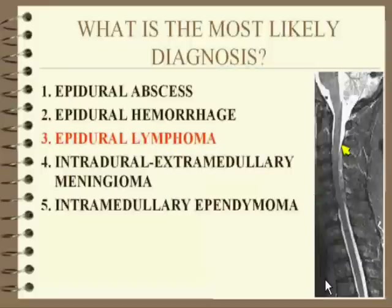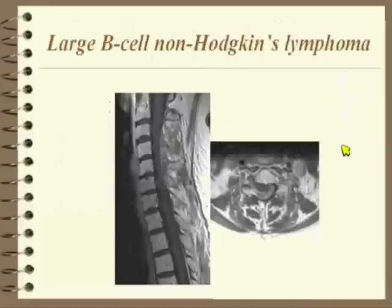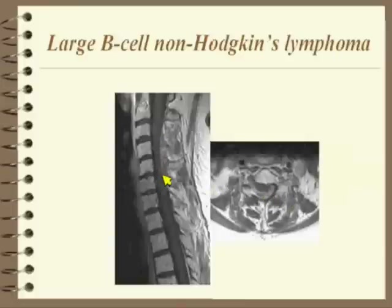This is a large B-cell lymphoma with a little bit of heterogeneous enhancement within it. Given the correct history, abscess is not a bad second diagnosis because there is some heterogeneity following contrast.